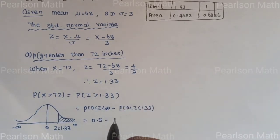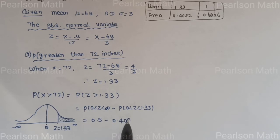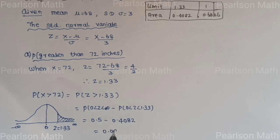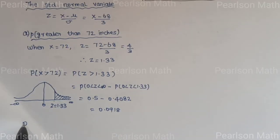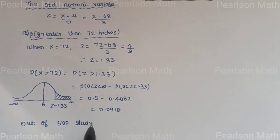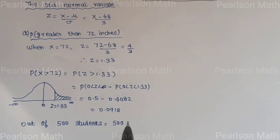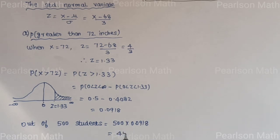So P(Z > 1.33) = 0.5 − 0.4082 = 0.0918. Out of 500 students: 500 × 0.0918 = 45.9, approximately 46 students.